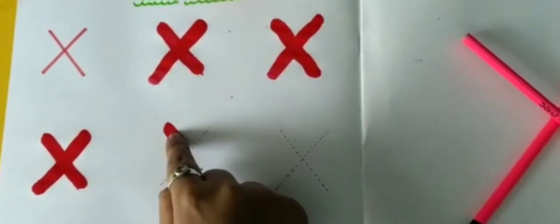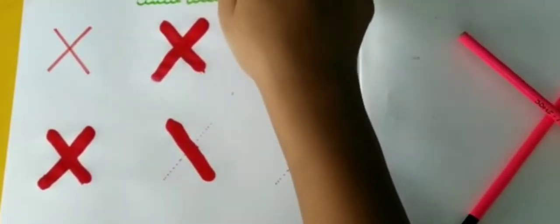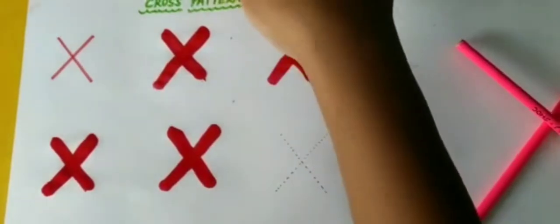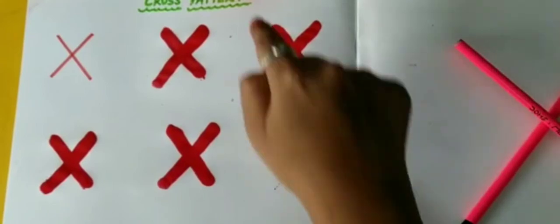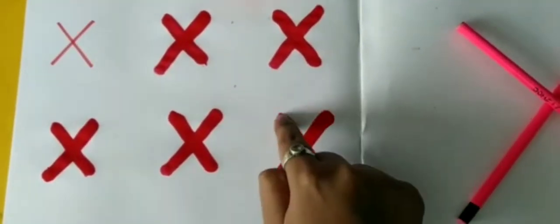One more. One slanting line. One slanting line and opposite slanting line.